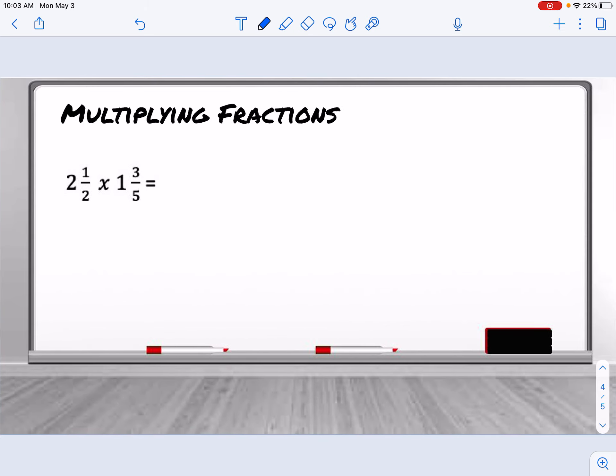With multiplying fractions, this is the one time we don't have to have a common denominator. But we do have to change our fractions to be improper. So remember, that's when we do our Coppell, Texas. We're going to multiply the denominator times the whole number. So 2 times 2 is 4. And then we add the numerator. So 4 plus 1 is 5. So we have 5 over 2 times.